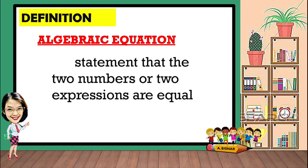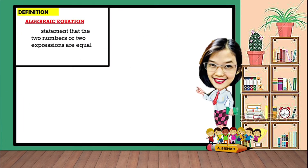So, let us define algebraic equation. It is a statement that two numbers or two expressions are equal. From the given definition, let us have our examples.